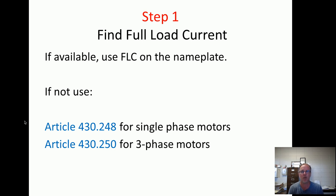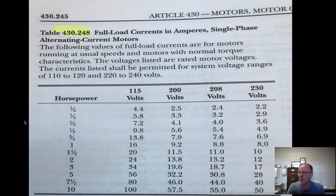Step one is so important. First of all, if it's available, you use the full load current on the nameplate. But if it's not available and you know the horsepower and the voltage, then you go to Article 430-248 or 430-250, depending on whether the motor is single-phase or three-phase. So right here is full load current and amperage for single-phase AC motors, Table 430-248.